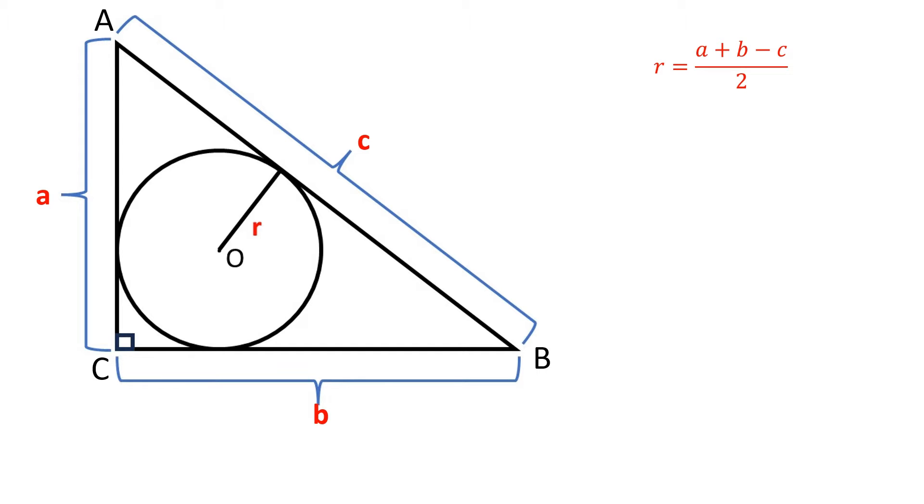where we represent the legs of the triangle as A and B and the hypotenuse as C. Let's prove this formula. Let's draw two radii to the sides AC and BC.